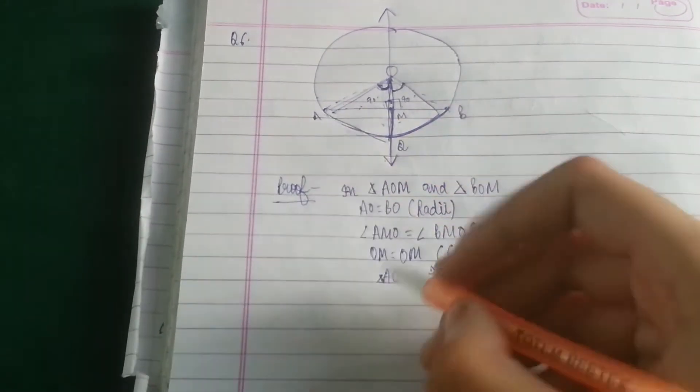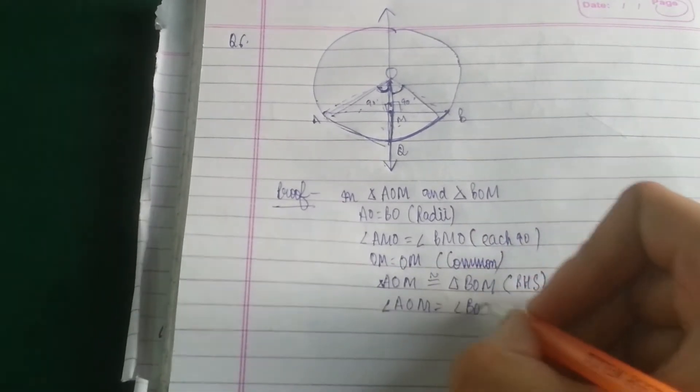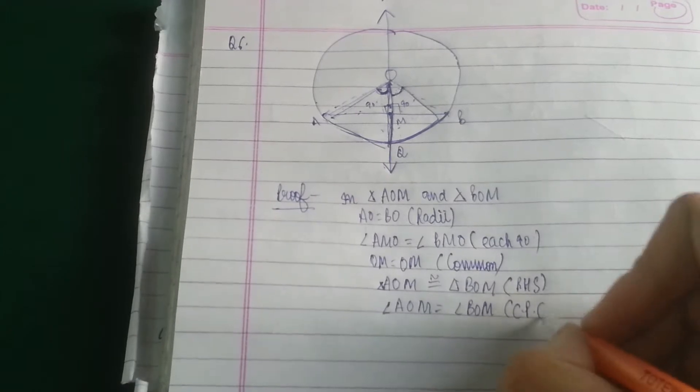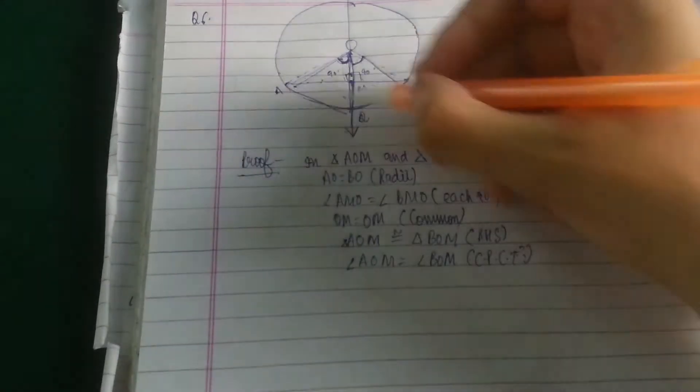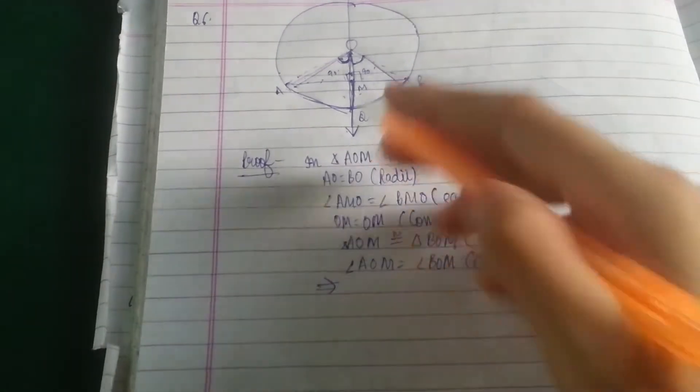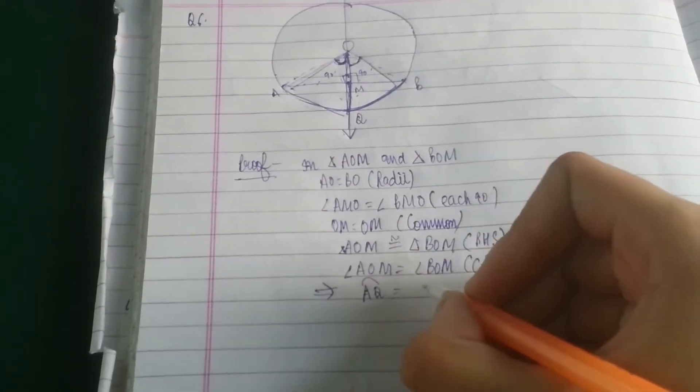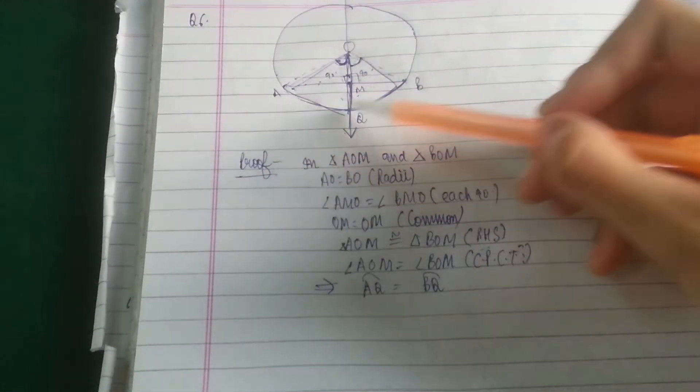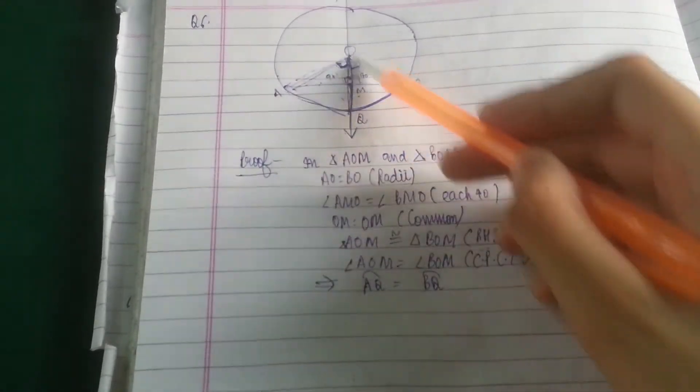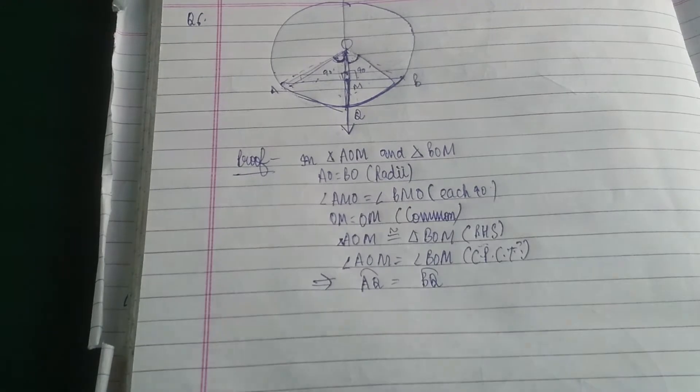Now if the triangles are congruent, then we can prove that angle AOM is equal to angle BOM by CPCT. If these two angles are equal, this implies that arc AQ will be equal to arc BQ because the angles are equal. The angles subtended by these arcs are equal. It means the arcs will be automatically proved equal.